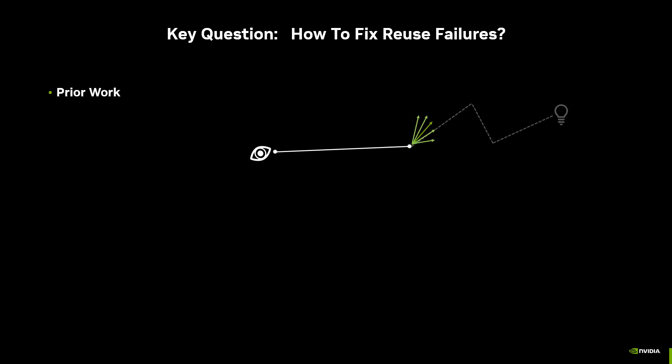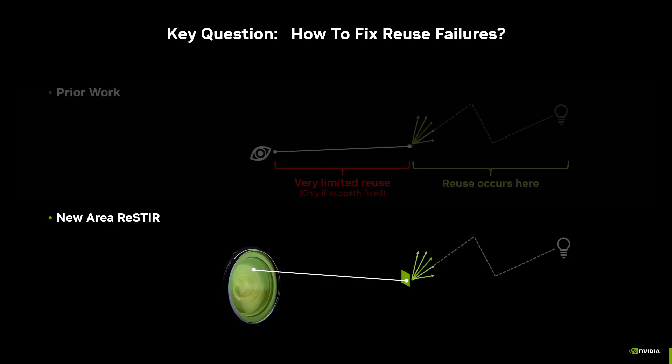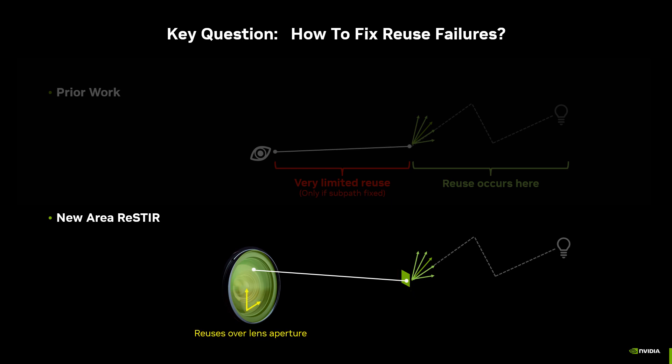So the key question is: how do we fix these reuse failures? Prior work traces a path from the camera through the scene past its primary bounce and then reuses all the samples past that. Notice this means reuse occurs after the primary hit and there's very limited reuse before that. Our new Area ReStirPT work allows us to reuse over the pixel footprint and also over the lens aperture, meaning we reuse across the entire length of the path.